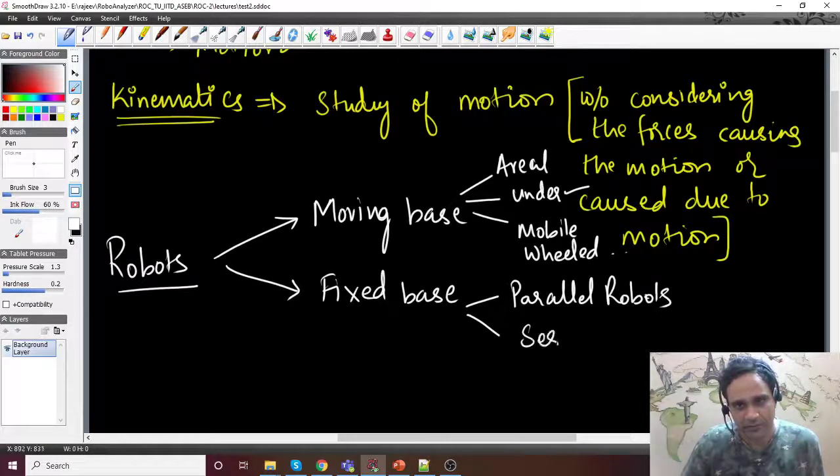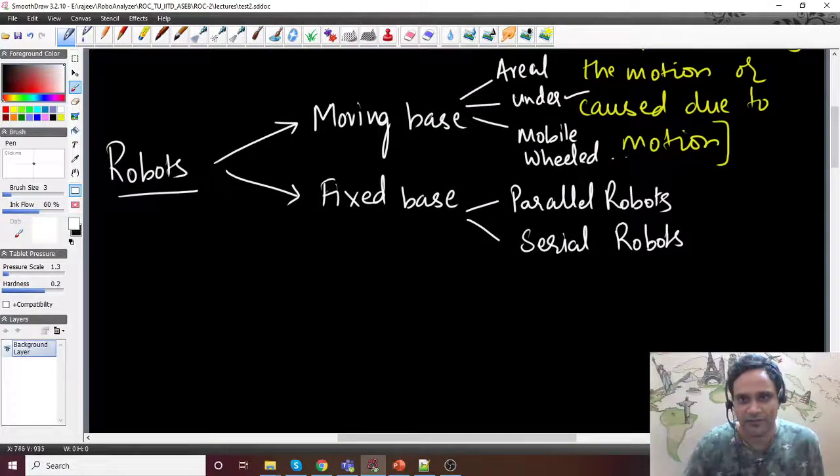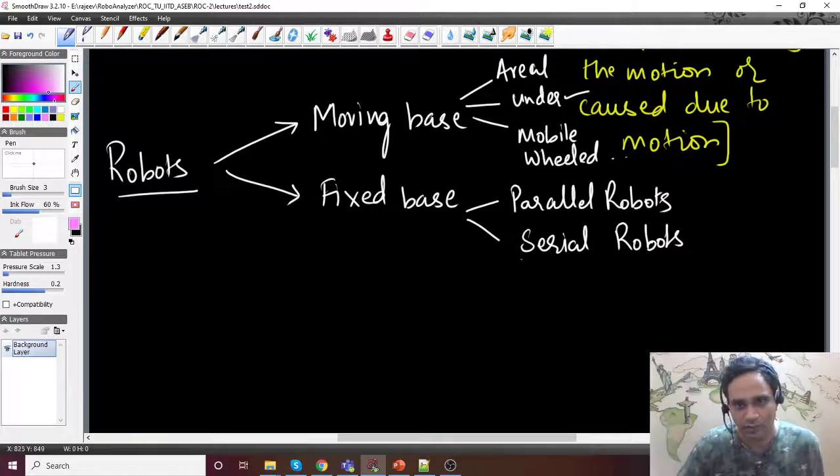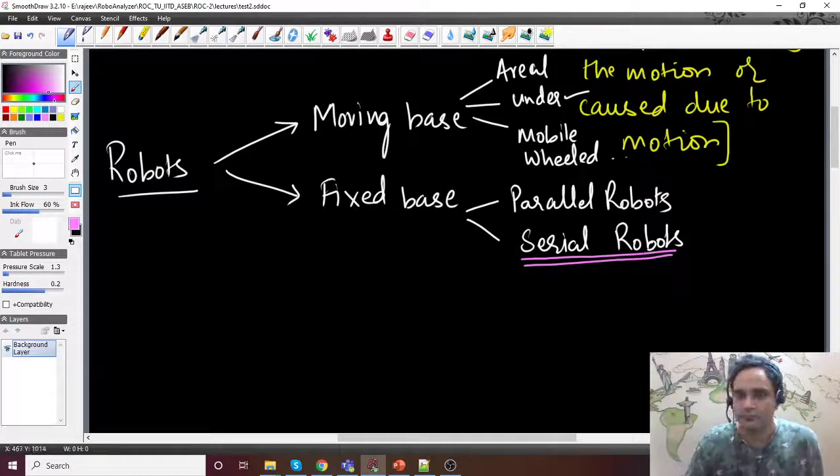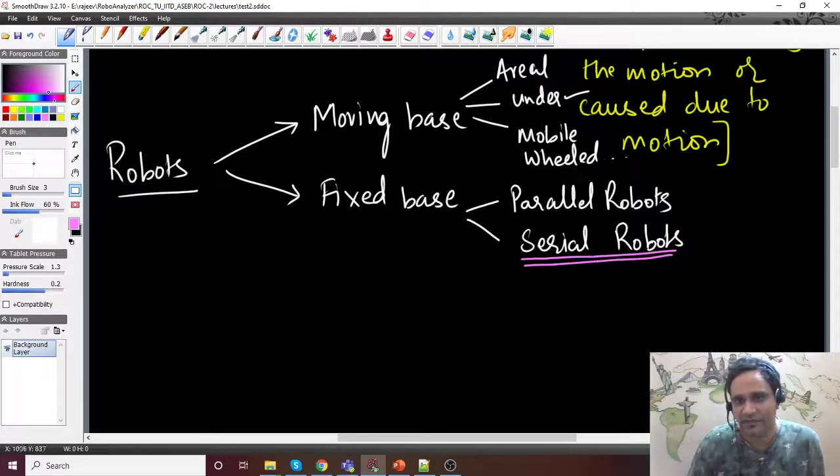In this set of lectures, we will be focusing more on serial robots. For other types of robots, there are topics that are available, and these are usually kind of advanced topics. Typically in an undergraduate or postgraduate mechanical engineering-based robotics course, we always start with serial robots.